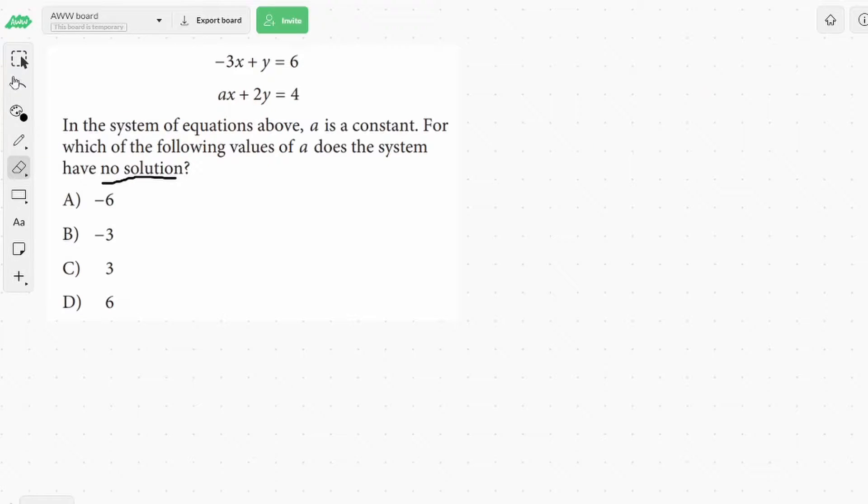We got our system of equations and we want to make both the x and y cancel. So right now we got a y and a 2y, so we should make this one 2y to line up with that. So if we multiply everything here by 2, we get negative 6x plus 2y equals 12 and the bottom would remain the same, ax plus 2y equals 4. So to cancel, we're going to start subtracting everything. 12 minus 4, we would get 8. 2y minus 2y, that would just cancel, so that would be 0.